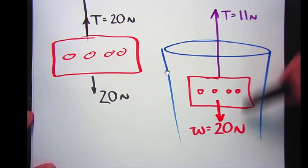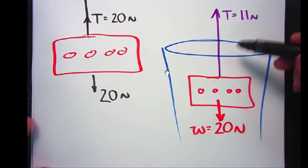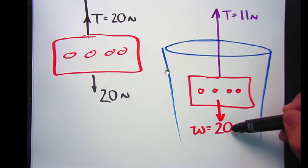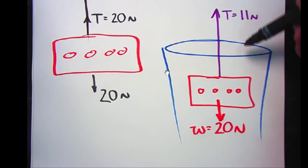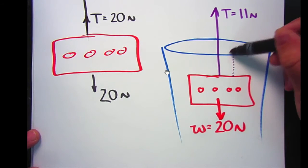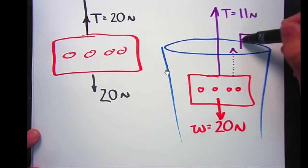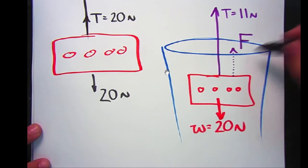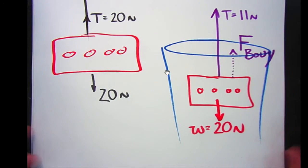I can tell there's an imbalance of forces on here the way it's drawn right now. If these were the only two forces acting on it, it's got 20 newtons pulling down, 11 newtons pulling up. It should accelerate downwards. There must be some other force pushing up on this. That force is called the buoyant force.